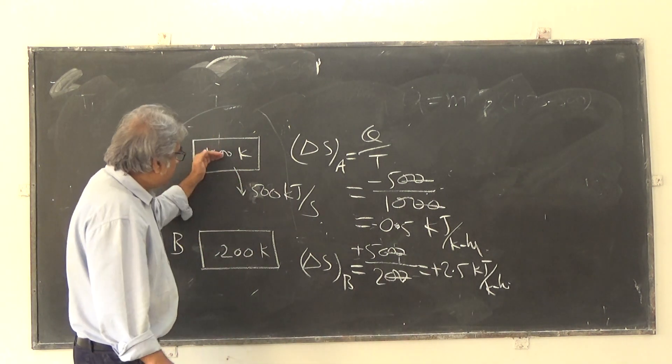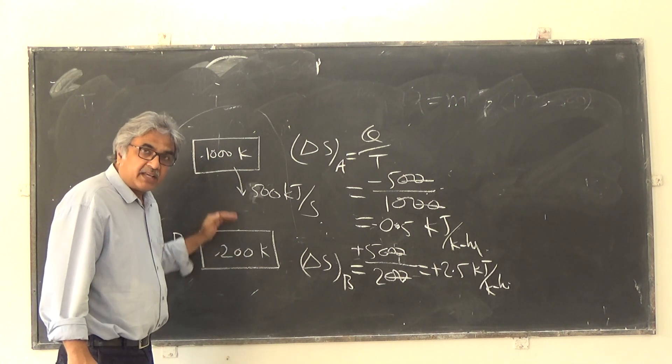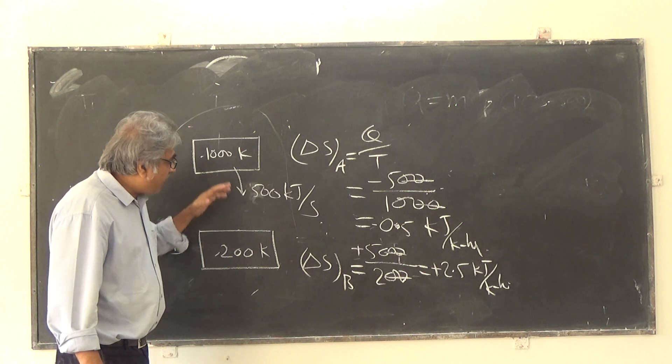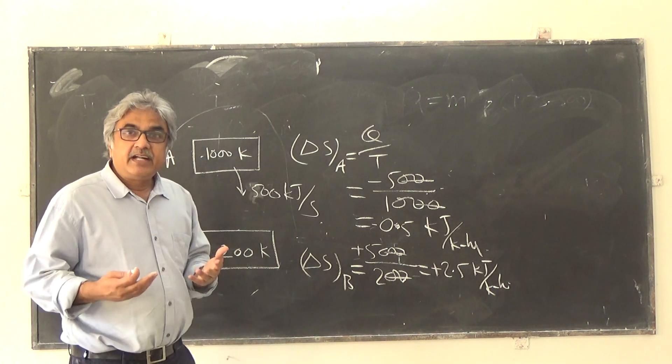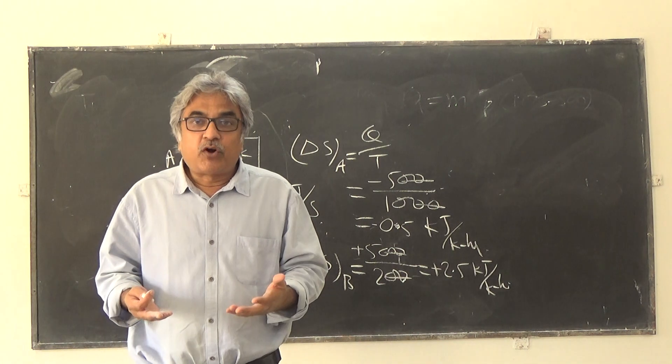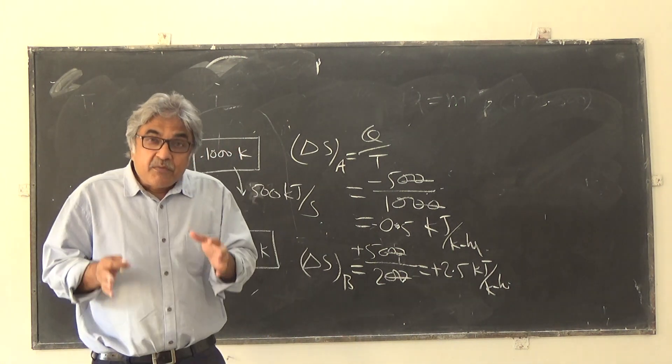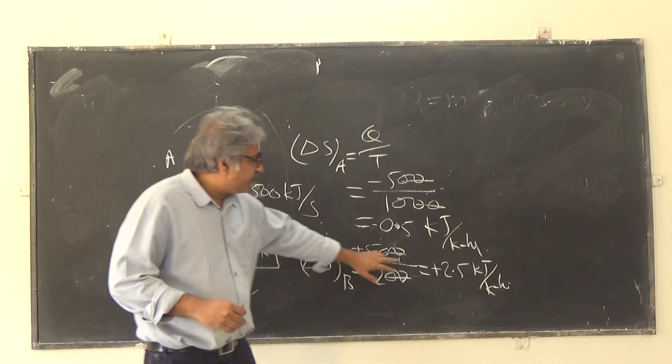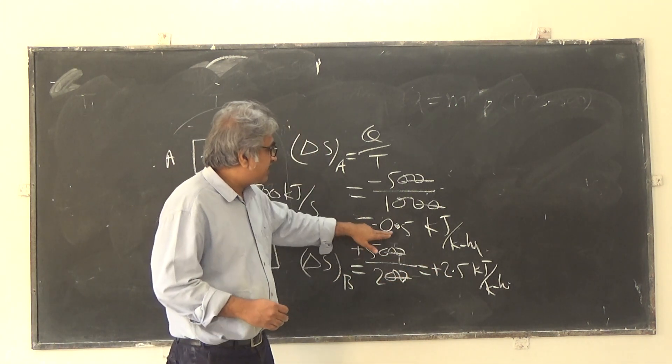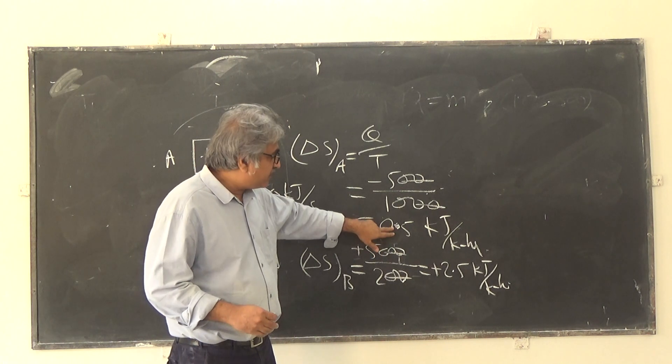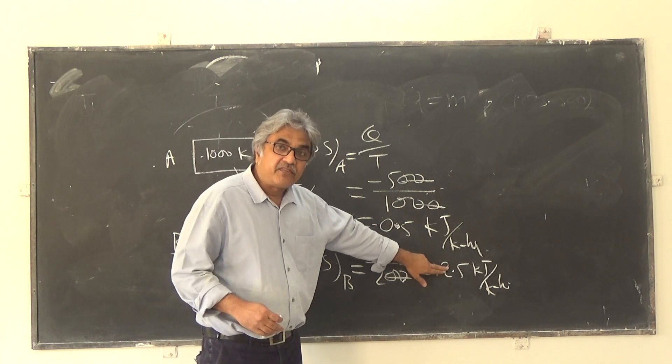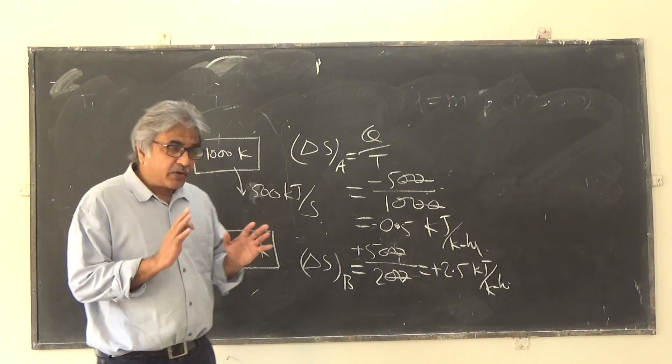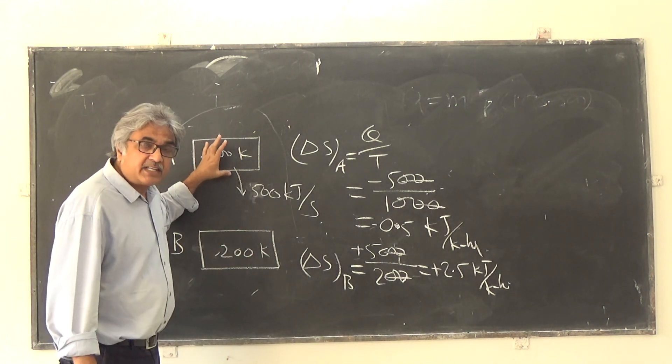That's the principle of increase of entropy or entropy principle which I explained to you in a video. This is what you need to always remember: whenever there is irreversible heat transfer, the entropy of the body which is giving the heat would decrease, entropy of the body which is receiving the heat will increase, but the increase will be more than the decrease. So if you see here, without sign it is 2.5, it is 0.5. Decrease is 0.5, increase is 2.5. So increase is more than decrease. It's always like that.